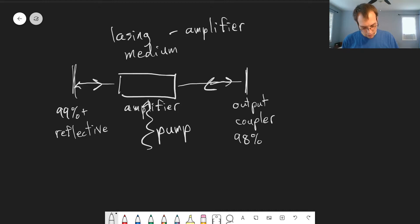So most of that light will get sent back through again. And as this light bounces back and forth through the amplifier, it gets brighter. We get more and more light.